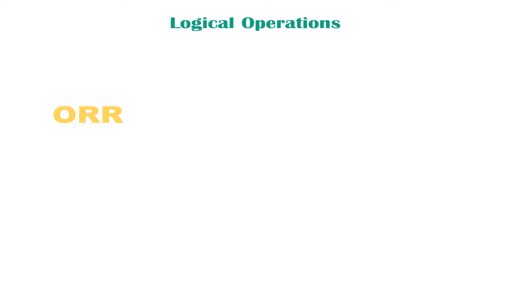Let's take a look at logical operations. First, let's look at the OR operation. Let's say you have two inputs, IN1 and IN2, and an output. If both inputs are disabled, that is they are 0 and 0, the output you get by performing the OR operation between these two inputs is 0.